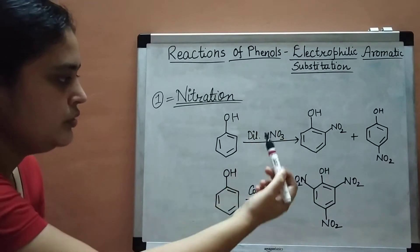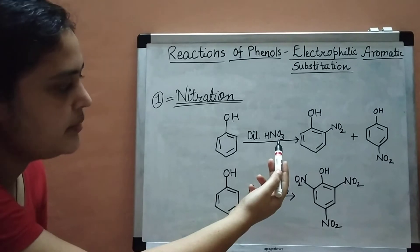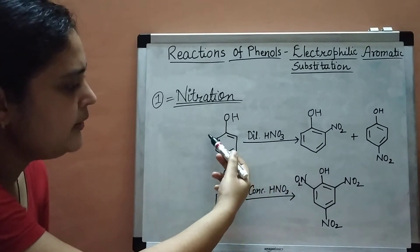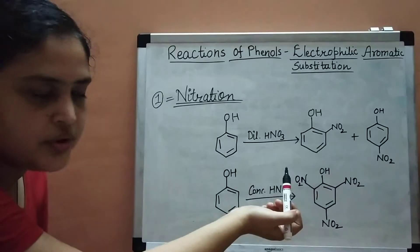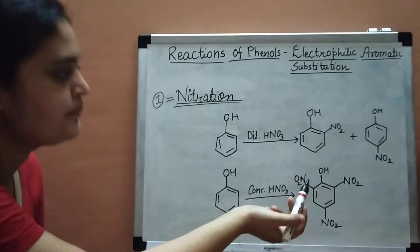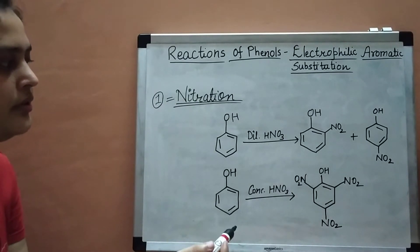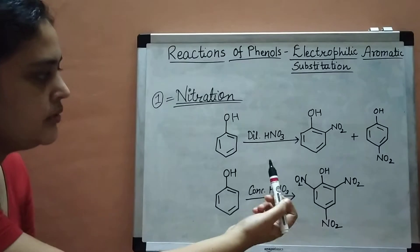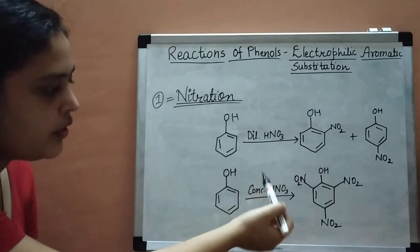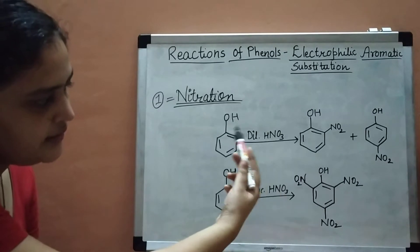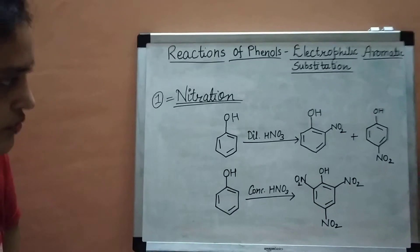According to the resonating structures of phenol, the ortho and para positions are electron-rich. So the electrophile, like NO2+ (nitronium ion), will attack those electron-rich positions. Therefore, phenol is ortho-para directing. Nitration is an electrophilic aromatic substitution reaction, and the reagent we can use is dilute nitric acid (HNO3) or concentrated HNO3.